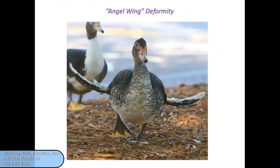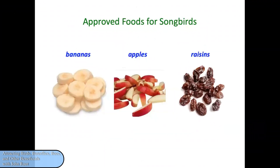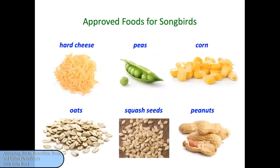Here's the consequence: this goose that was fed too much processed baked goods will never fly again. Approved foods for songbirds include eggshells — not just because females can use the calcium to make their eggs, but any bird can use the roughage of eggshells to help them digest food. Bananas, apples, and raisins are among the fruits that songbirds can eat. Hard cheese, peas, corn, oats, squash seeds, and peanuts or other nuts are also quite appealing to birds.